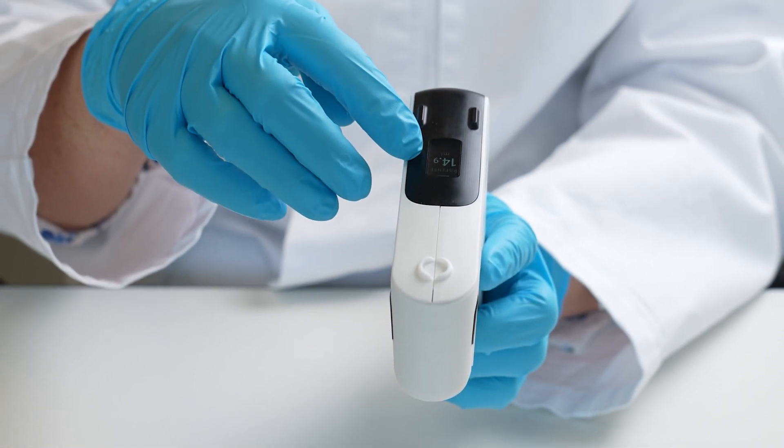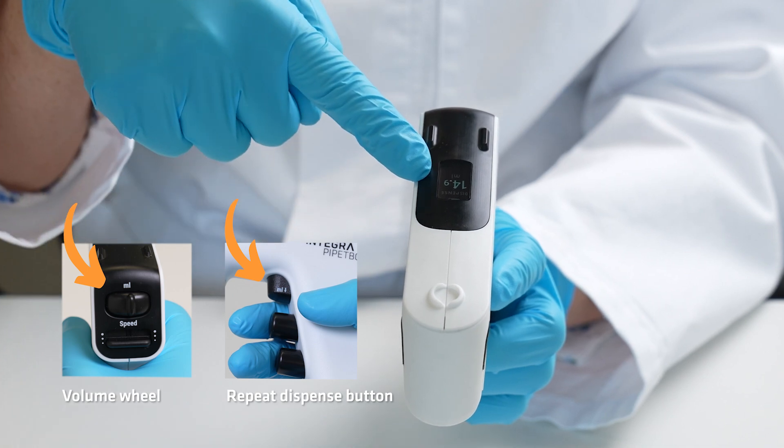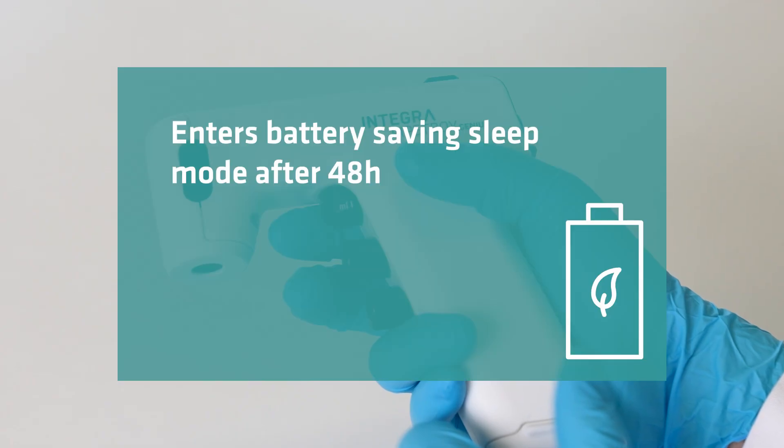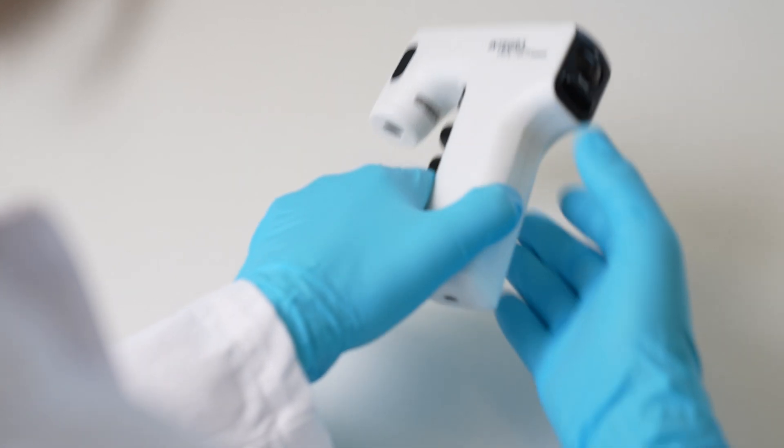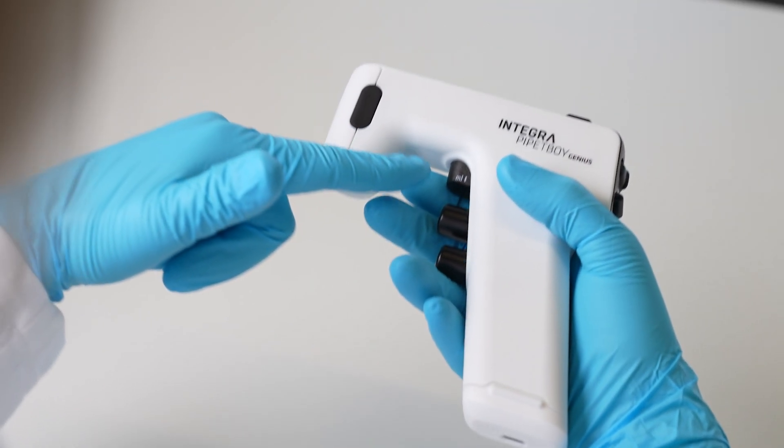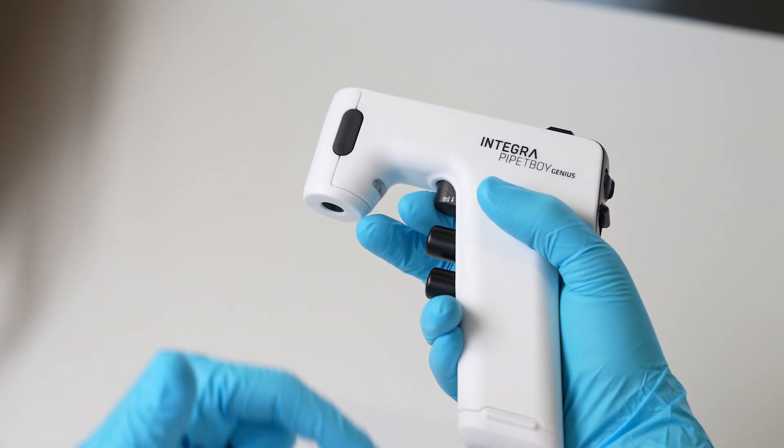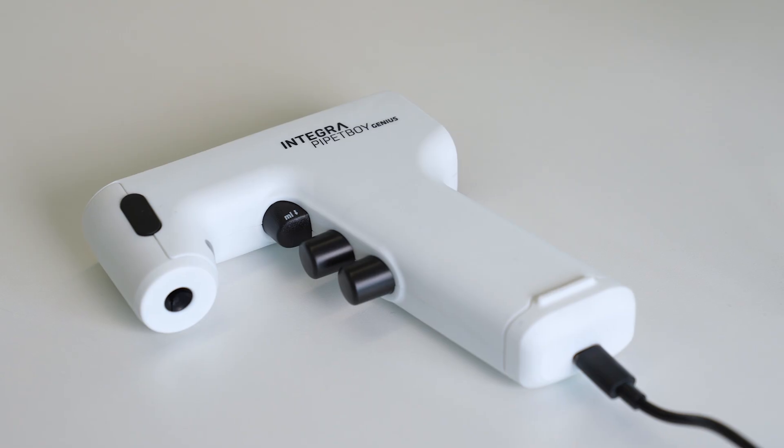Simply picking it up will switch it back on, as well as turning the volume wheel or pressing the repeat dispense button. However, if unused for over 48 hours or if switched off, the Pipette Boy Genius enters battery-saving sleep mode. To switch on again, simply press and hold the repeat dispense button for two seconds.